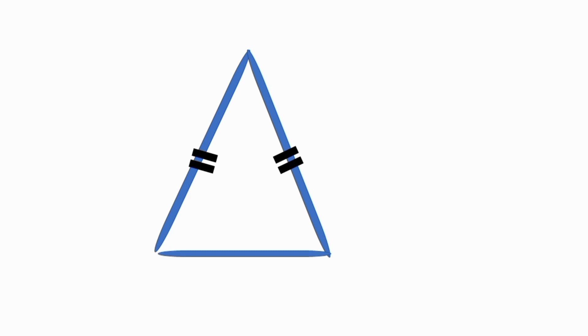An isosceles acute triangle is a triangle in which all three angles are less than 90 degrees and at least two of its angles are equal in measurement.